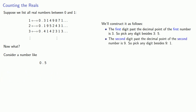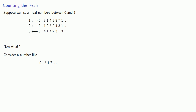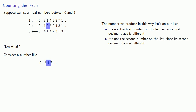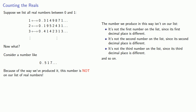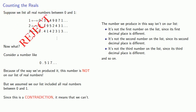The second digit past the decimal point of the second number is 9, so pick any digit besides 9 — how about 1? The third digit past the decimal point of the third number is 4, so pick any digit besides 4. And so on. If we construct our number this way, the number we produce isn't on our list. It's not the first number since its first decimal place is different. It's not the second number since its second decimal place is different. It's not the third number since its third decimal place is different, and so on. Because of the way we've produced it, this number is not on our list of real numbers. But we assumed we listed all the real numbers between 0 and 1 — and since this is a contradiction, this means we can't list all of our numbers this way.